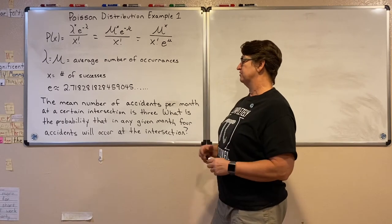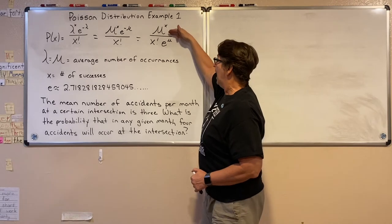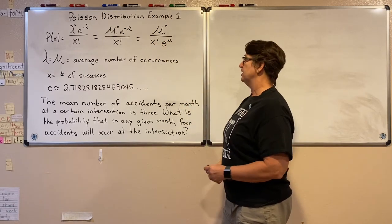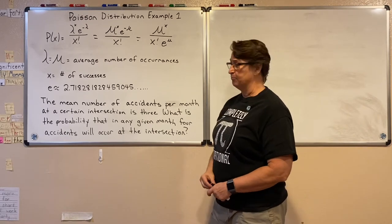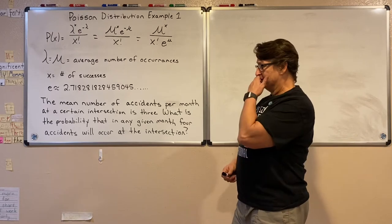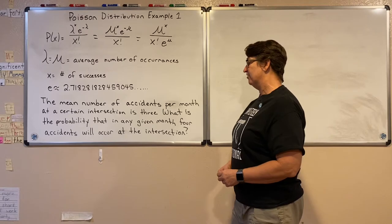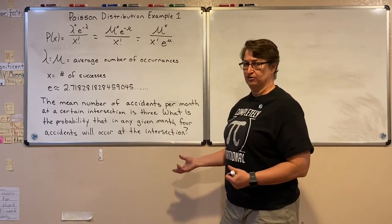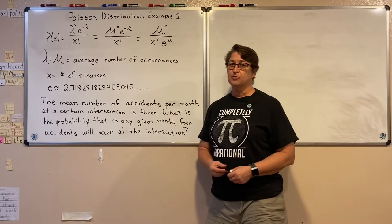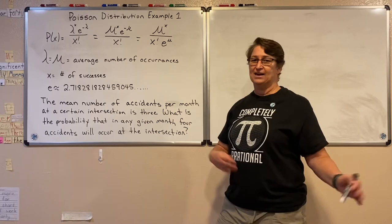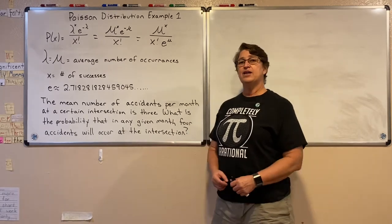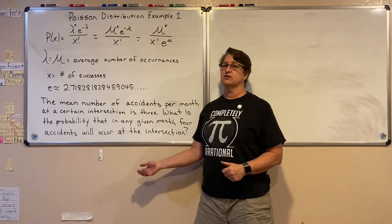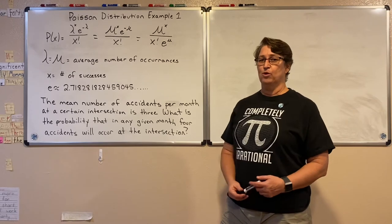So we have the average raised to our number of successes over the number of successes factorial times e raised to the average. Here's an example: the mean number of accidents per month at a certain intersection is 3. What is the probability that in any given month four accidents will occur? Let's check — each accident is an independent event, and it's a random, independently occurring event, which fits Poisson.